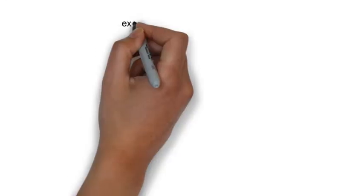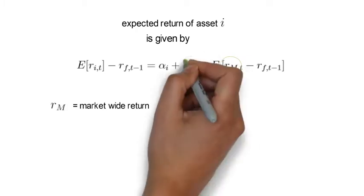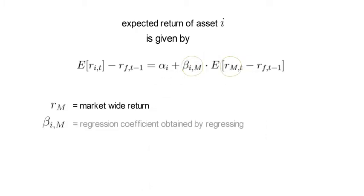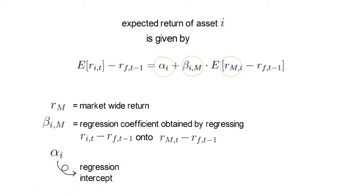It's well known that the corresponding expected return of asset i is given by the following expression, which more formally is the expected risk premium of asset i. Here r_M is the market-wide return. Beta i,M is the regression coefficient that you obtain when regressing the excess return of asset i onto the market's excess return. Alpha coincides with the regression intercept and should be zero if the CAP-M holds.